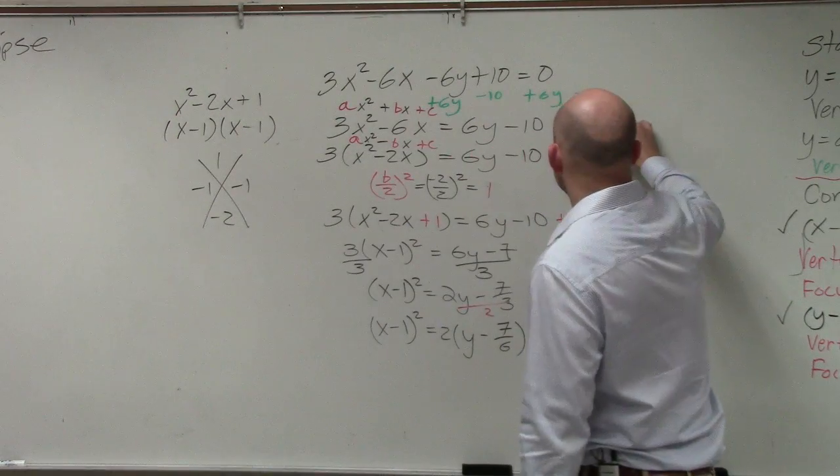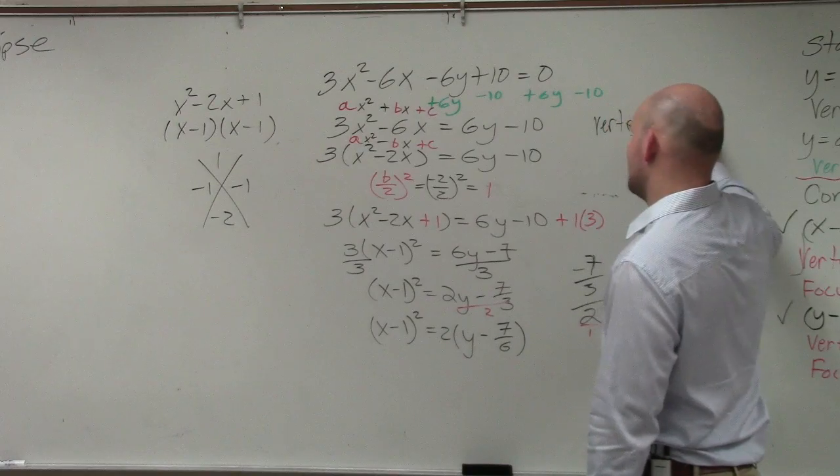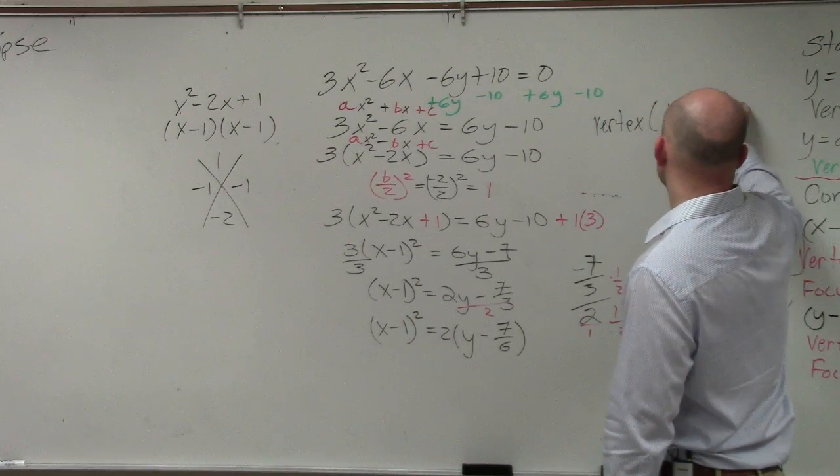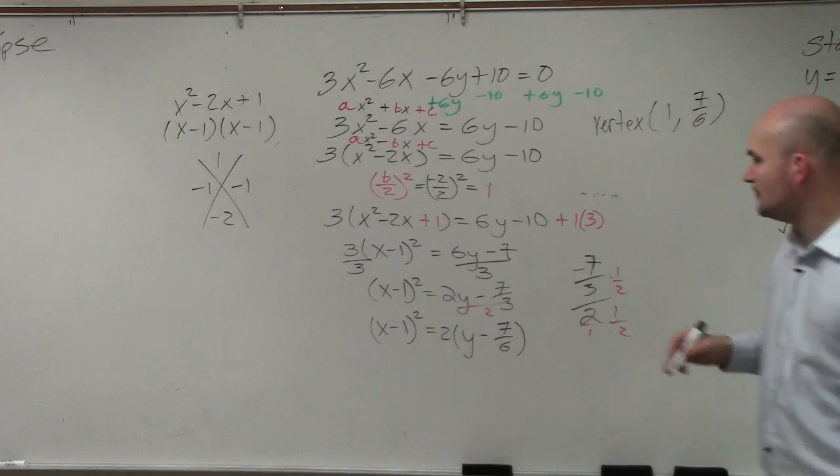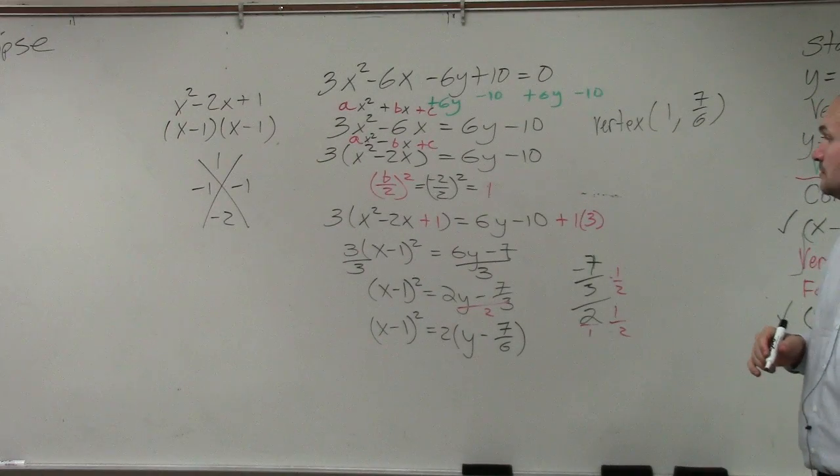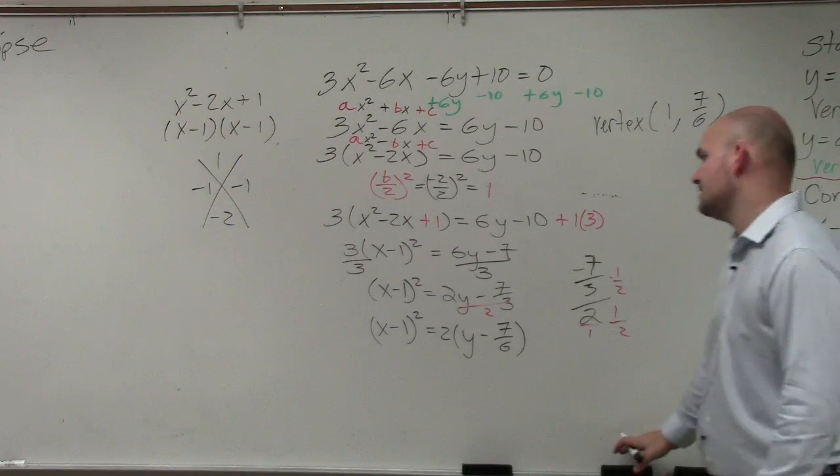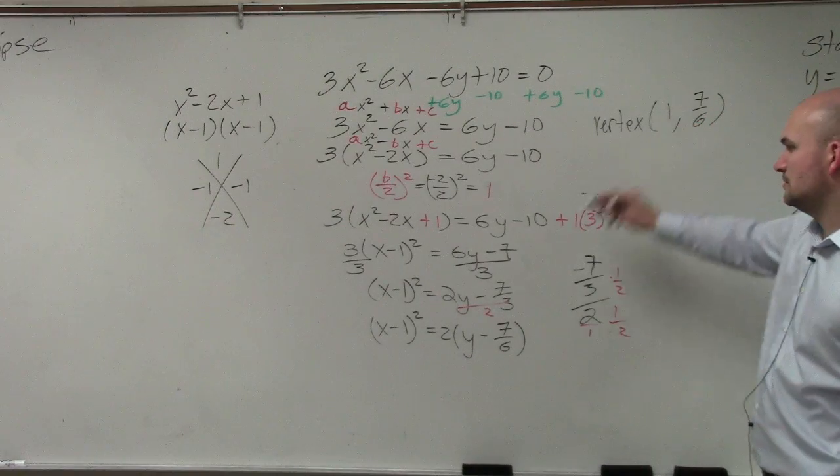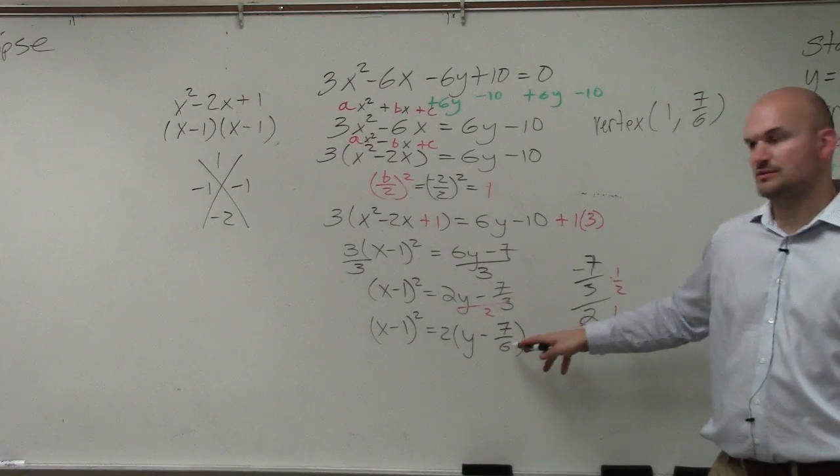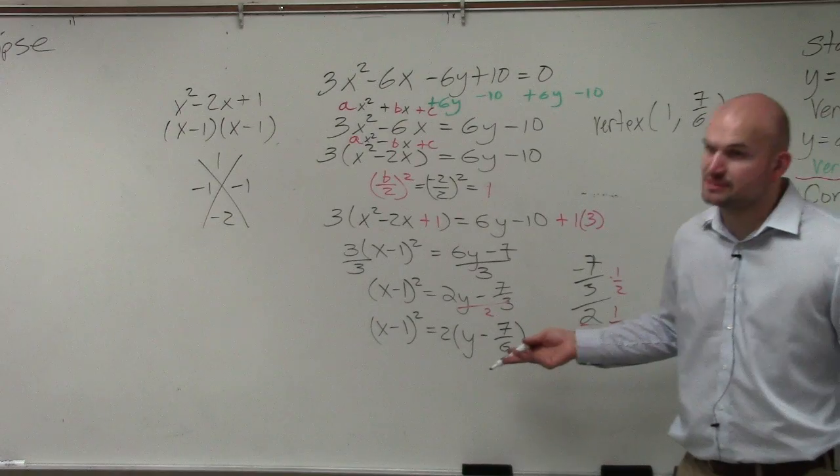Therefore it asks you to identify the vertex. Vertex is going to be 1 comma 7/6. But it's h,k right? Yes, I forgot. 1, 7/6. H is always with x, right?